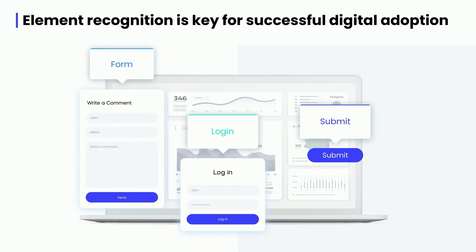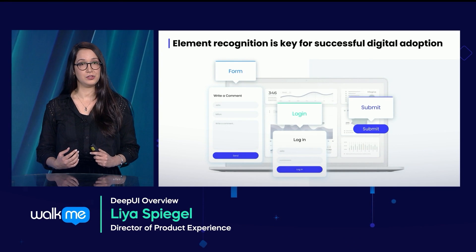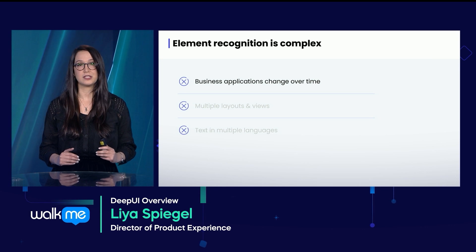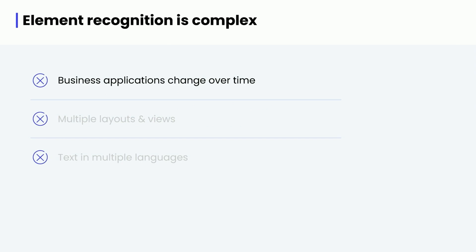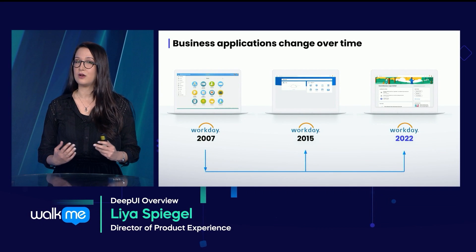This can look deceivingly simple, but there are actually quite a few challenges involved in building a world-class digital adoption platform. The first challenge is that business applications are constantly being updated. Whether it's the addition of new features or improved user experiences, this is a world of constant inherent change. If we take Workday as an example, we can see that even just the home page has changed dramatically over the years, and these types of changes happen all the time.